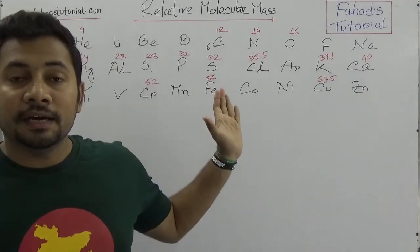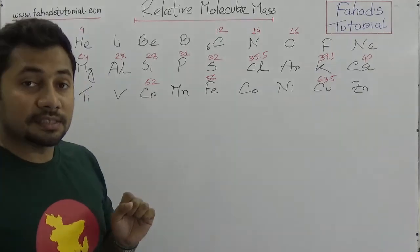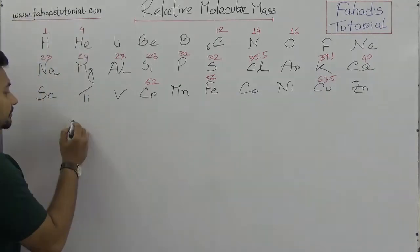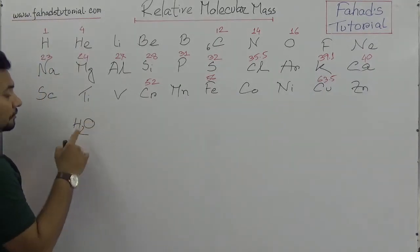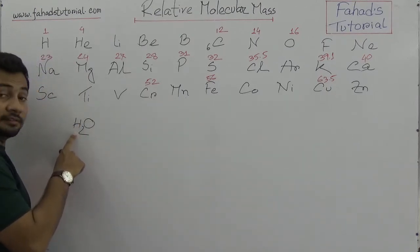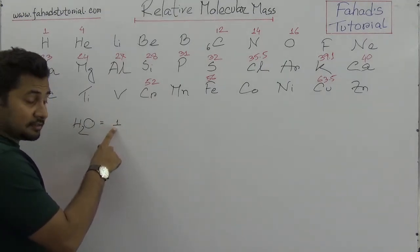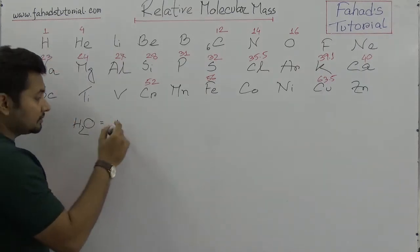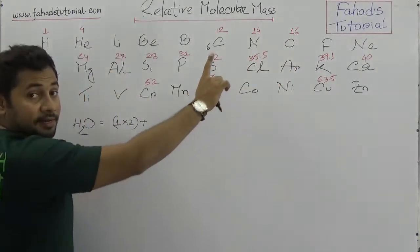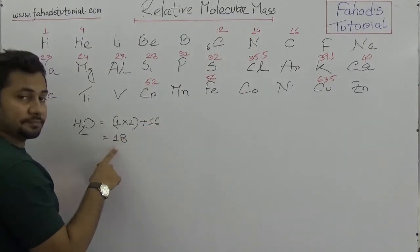Now let's calculate relative molecular mass. For one molecule of water, the relative atomic mass of hydrogen is 1 and there are two atoms, so that gives 2. Oxygen has a relative atomic mass of 16. Adding them together: 2 plus 16 equals 18. So the relative molecular mass of water is 18.